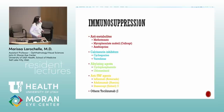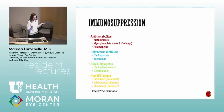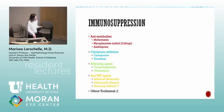Immunosuppression categories: think in categories to understand side effects and avoid using two agents from the same category. Anti-metabolites: methotrexate, mycophenolate (CellCept), azathioprine. Calcineurin inhibitors: cyclosporine and tacrolimus. Alkylating agents — the scary ones with cancer risk — are the only ones shown to actually induce remission. We think cyclophosphamide can induce remission, unlike the other classes. All other agents suppress disease but it can return when the drug is stopped if the disease hasn't run its course.